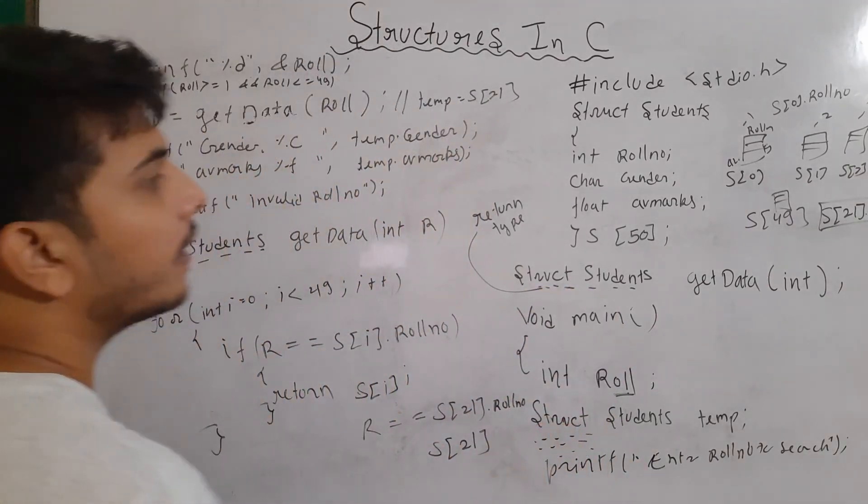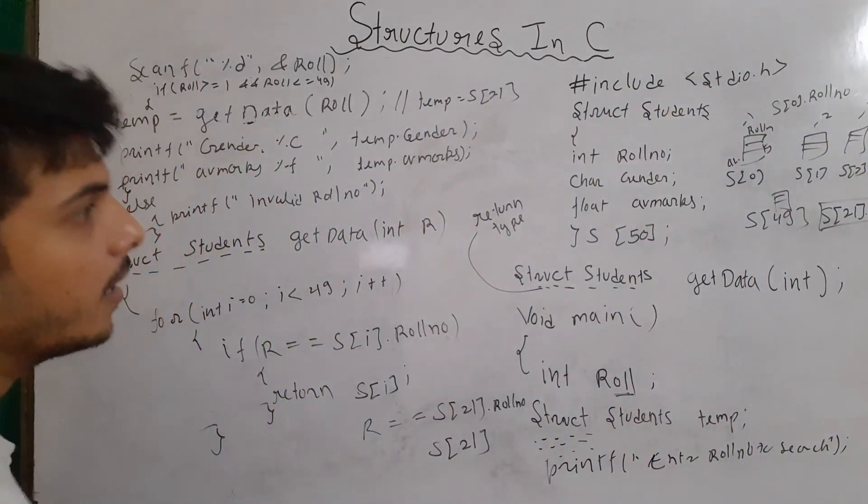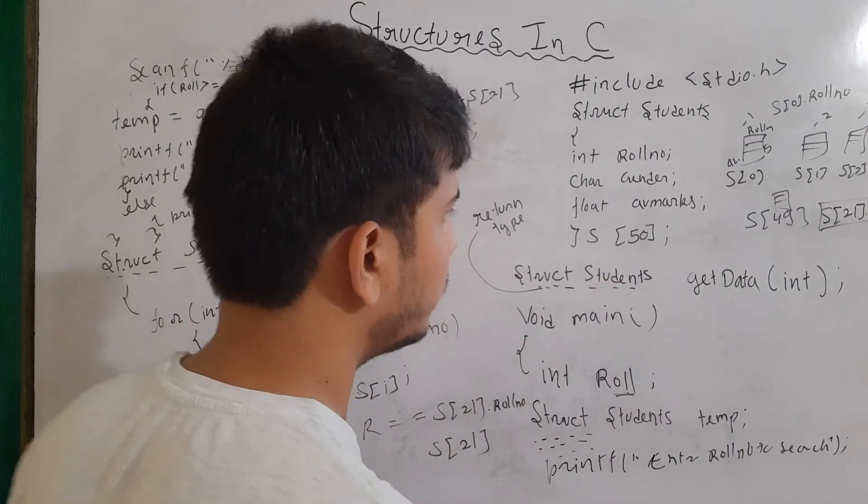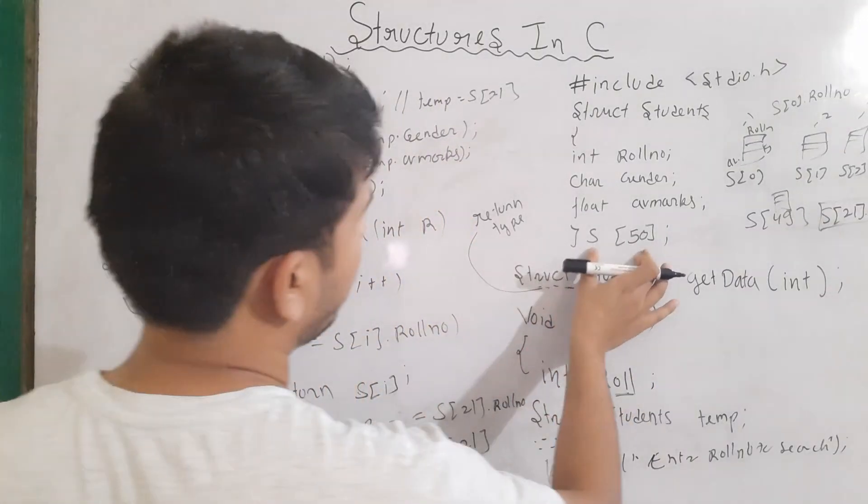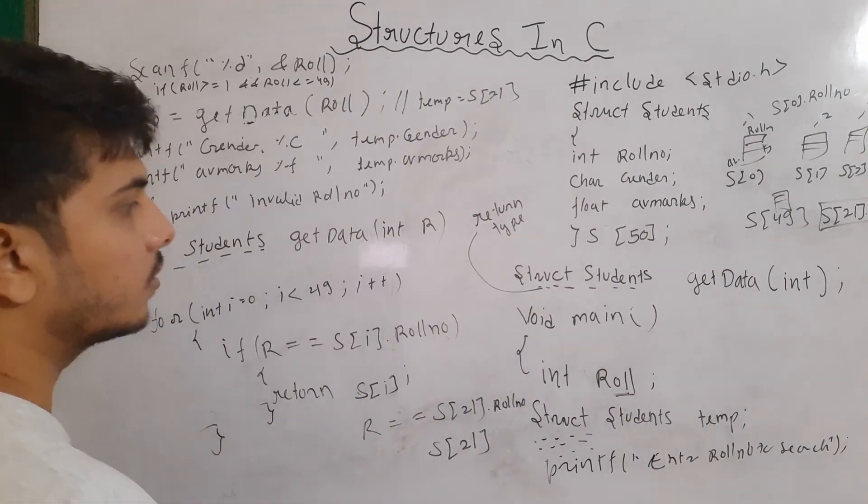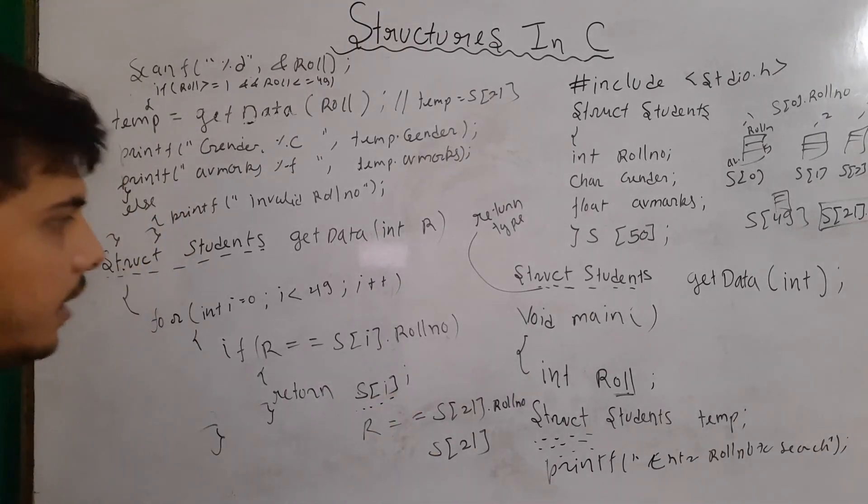Now, one more thing is that let's say that I had made another structure of name let's say teachers. So, a struct students will not be able to return the variable of type struct teachers. Because both will be mismatched. So, keep in mind that. This is how we return structure variable.